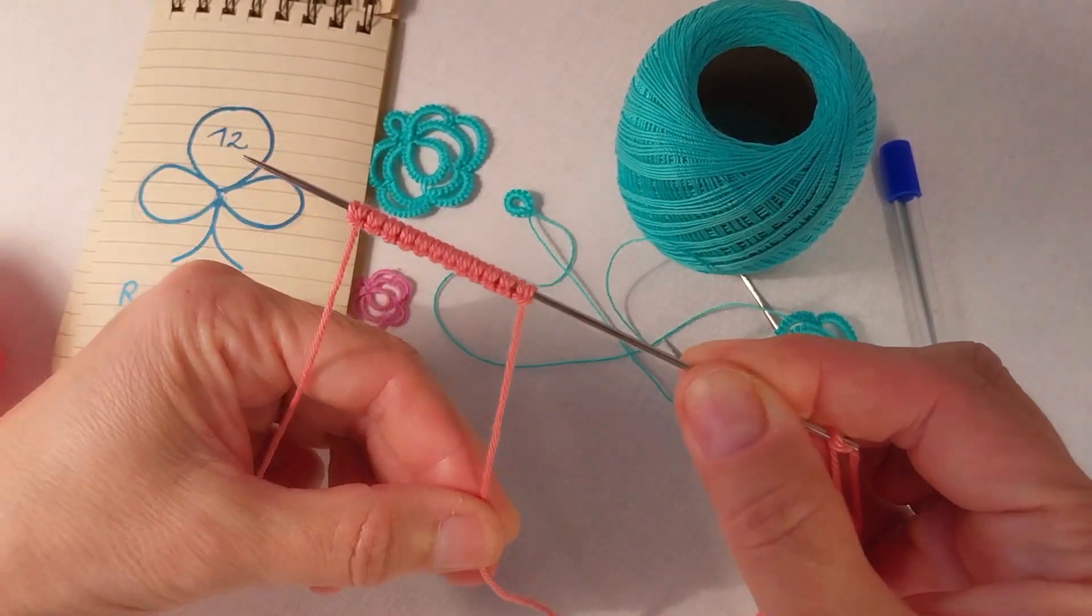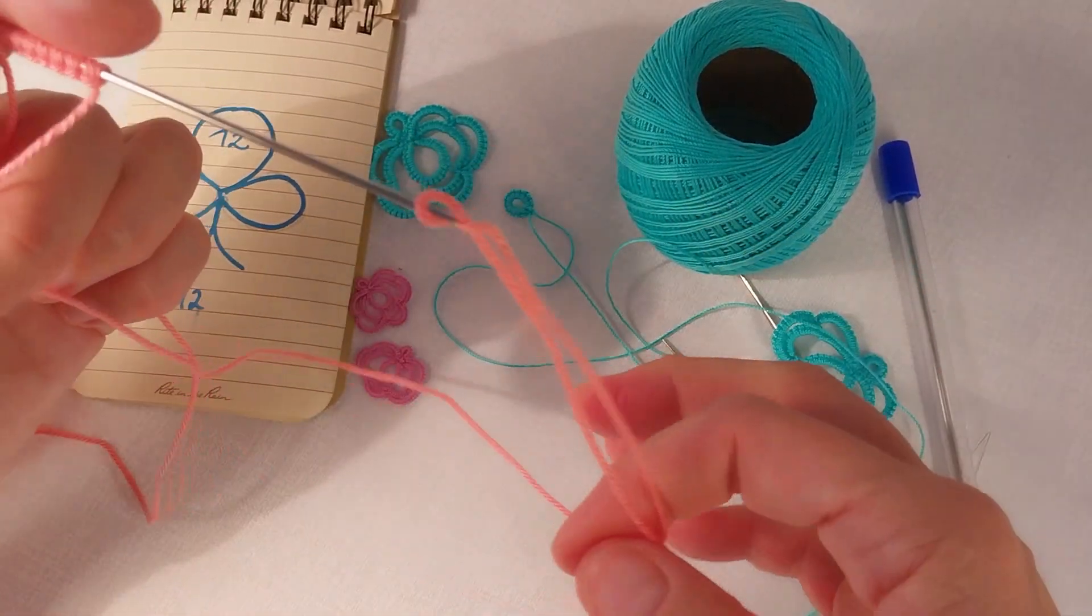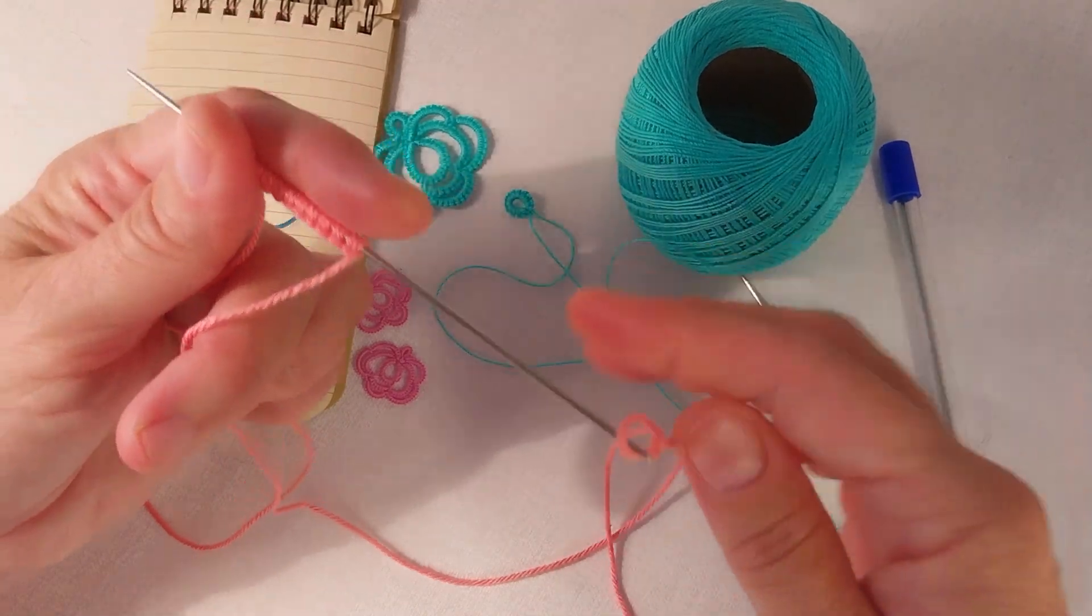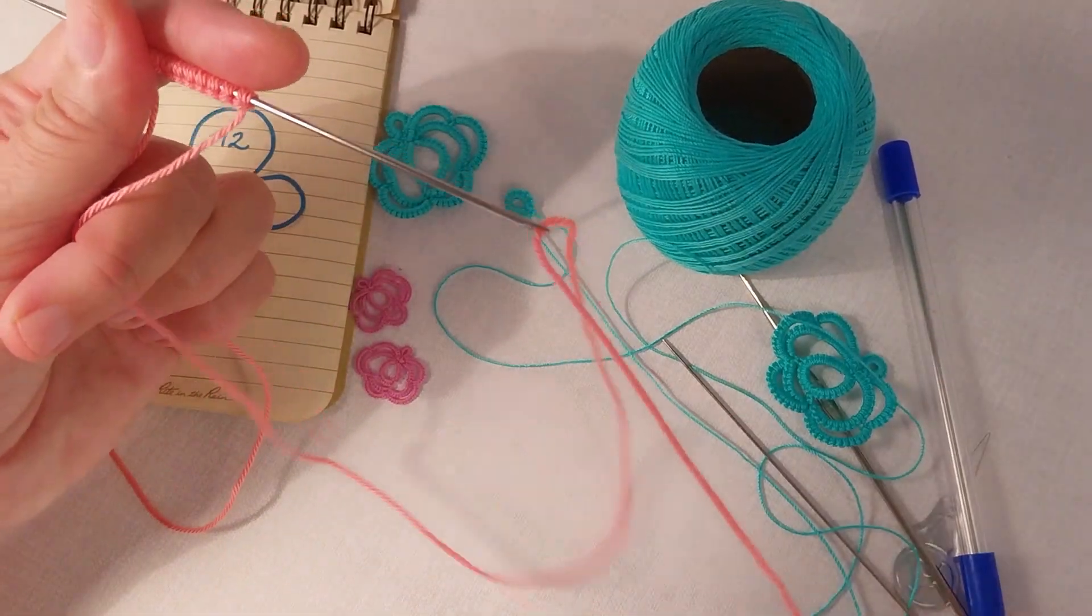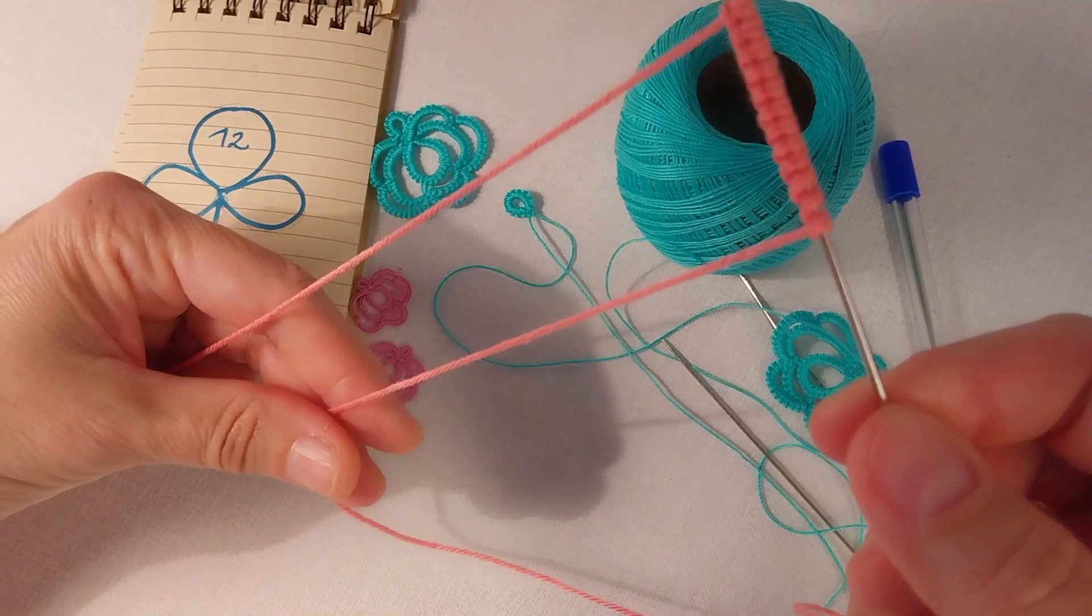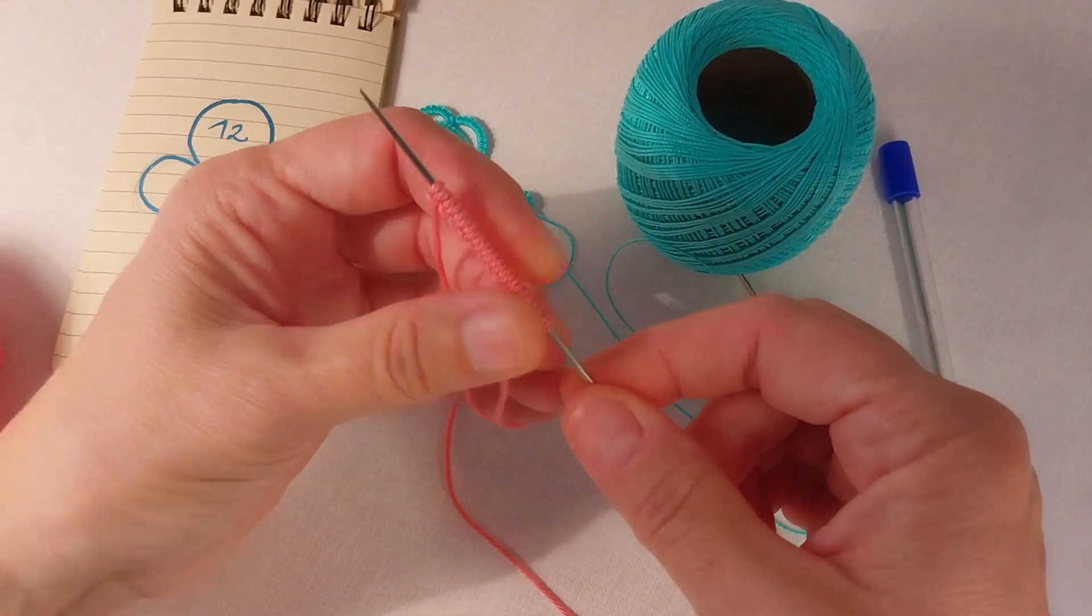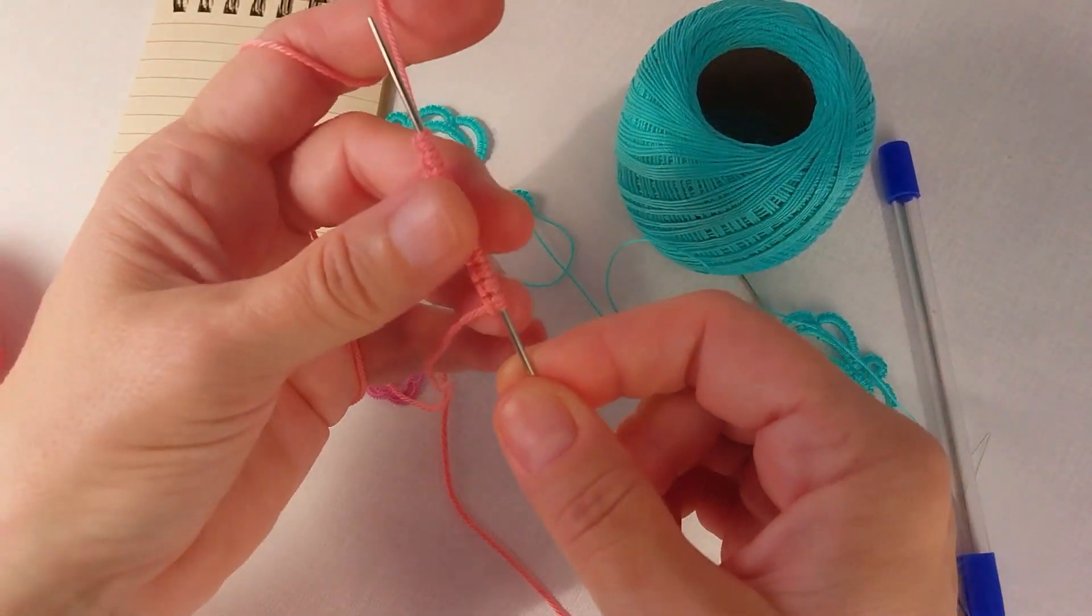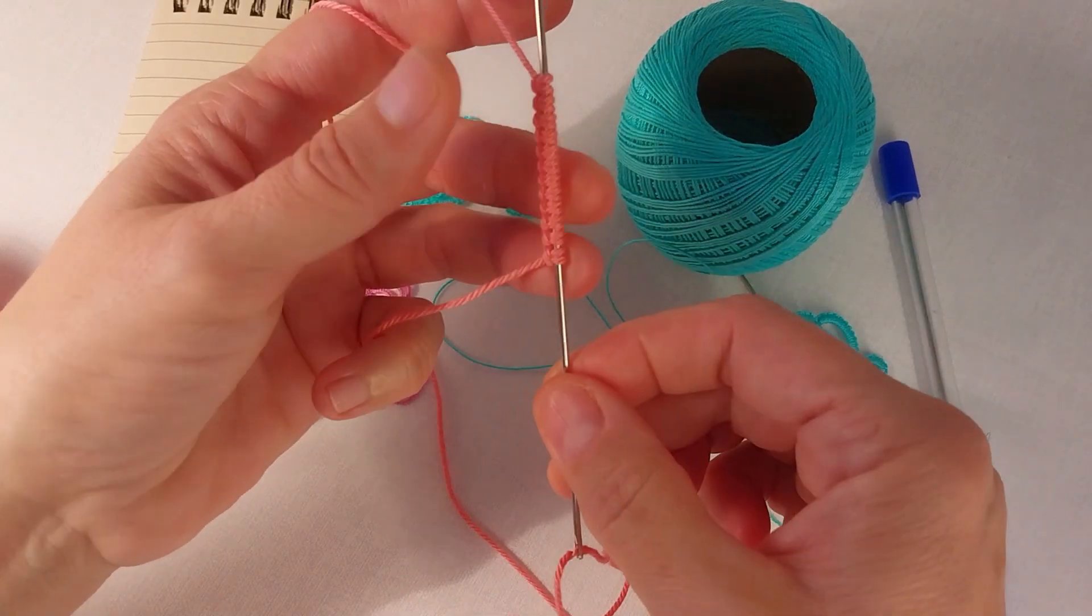You see the stitches are on the needle. I have a loop here and my thread is coming right here. So we have to make the ring, form a ring from the stitches.